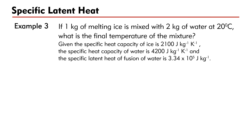Let's look at a numerical example. If 1 kg of melting ice is mixed with 2 kg of water at 20 degrees Celsius, what is the final temperature of the mixture? Given: specific heat capacity of ice is 2100 J/kg°C, specific heat capacity of water is 4200 J/kg°C, and the specific latent heat of fusion of water is 3.34×10⁵ J/kg.